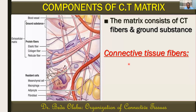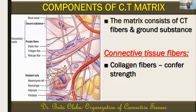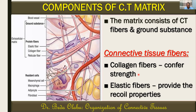Then we have the connective tissue fibers. Connective tissue fibers are protein filaments present within the matrix of connective tissues, and these protein filaments have different varieties and functions. There are two major types: collagen fibers, which confer strength to connective tissues, and elastic fibers, which provide elastic recoil properties. We will elaborate more about connective tissue fibers in the next session on fibrous connective tissues.